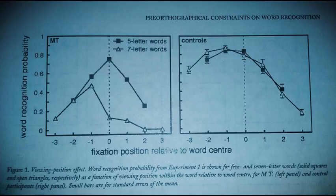In figure one, viewing position effect word recognition probability from experiment number one is shown for 5 and 7 letter words (solid squares and open triangles respectively) as a function of viewing position within the word relative to word center, for MT (left panel) and control participants (right panel). Small bars are for the standard errors of the mean.